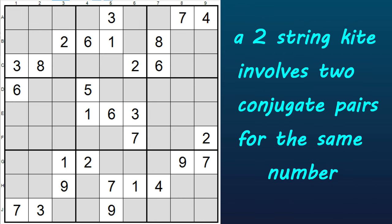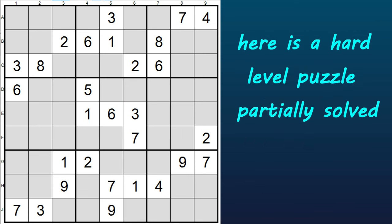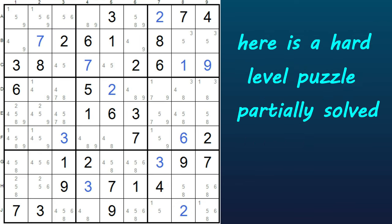A two-string kite involves two conjugate pairs for the same number, with one pair located in a row and the other pair in a column. Let's look at this hard puzzle, solved to a point where we can find a two-string kite.